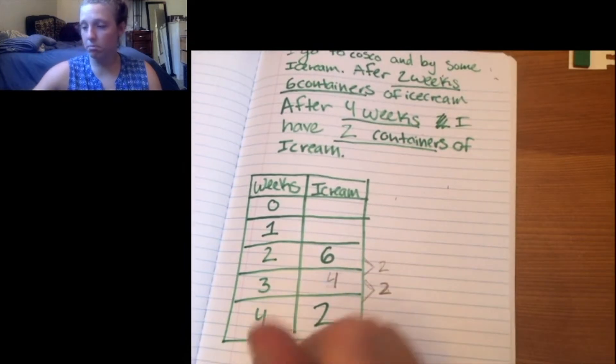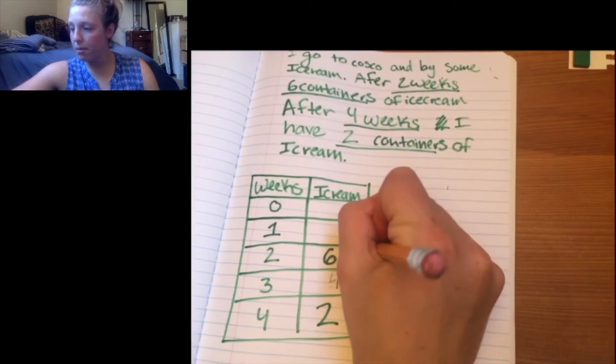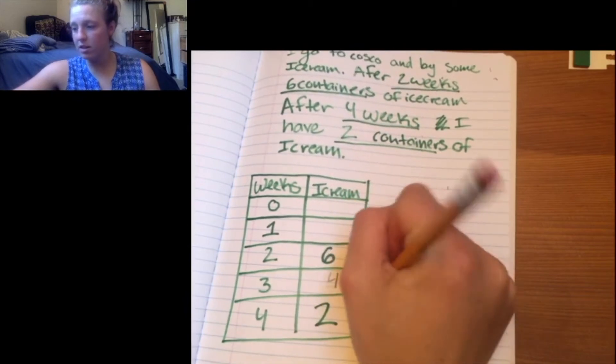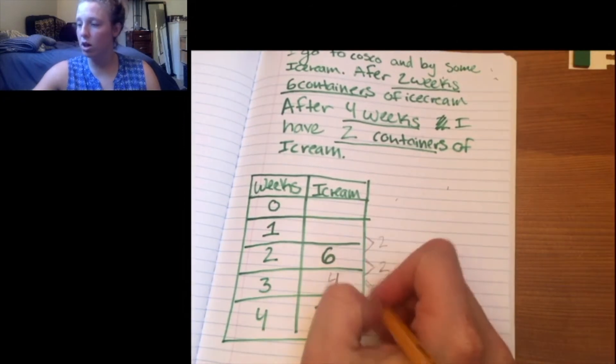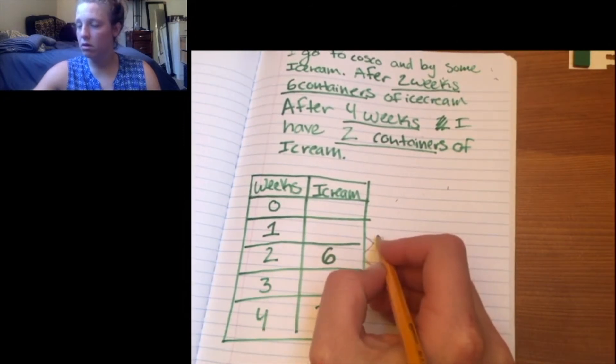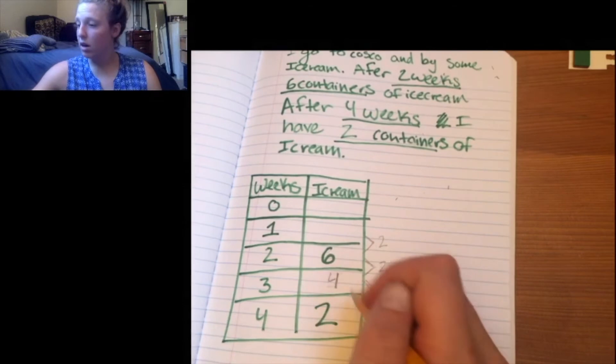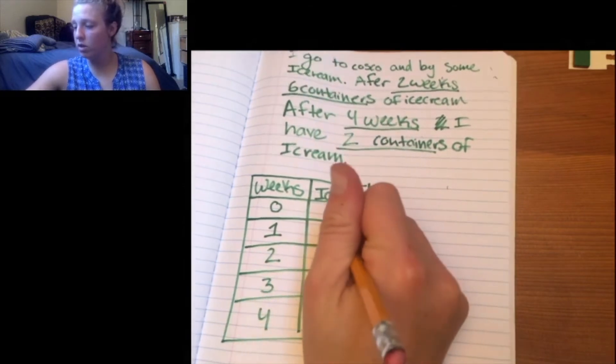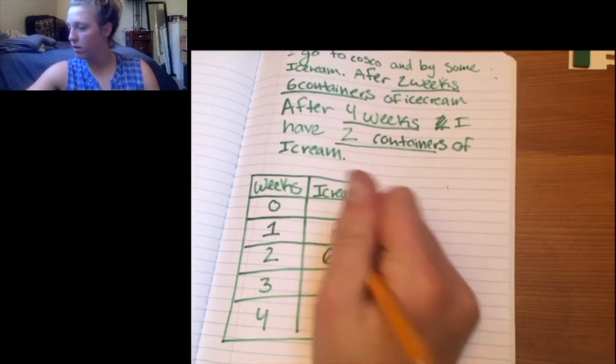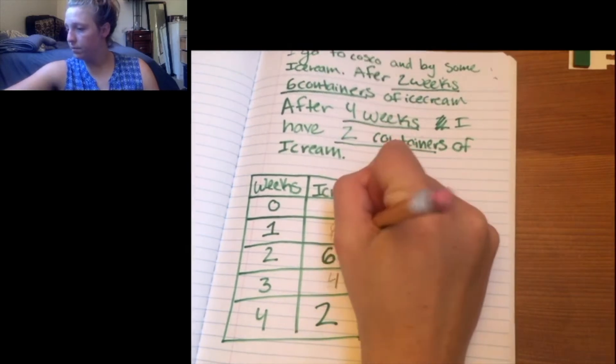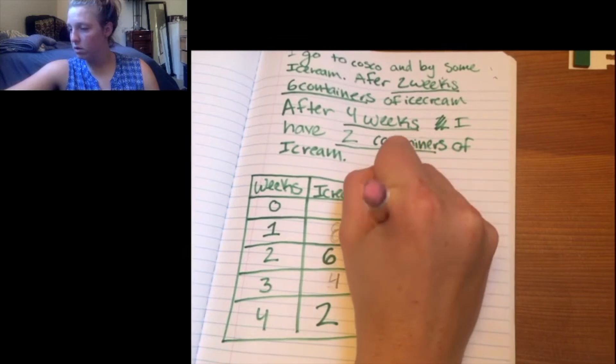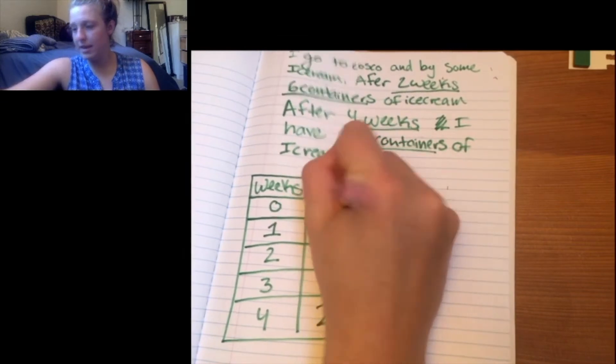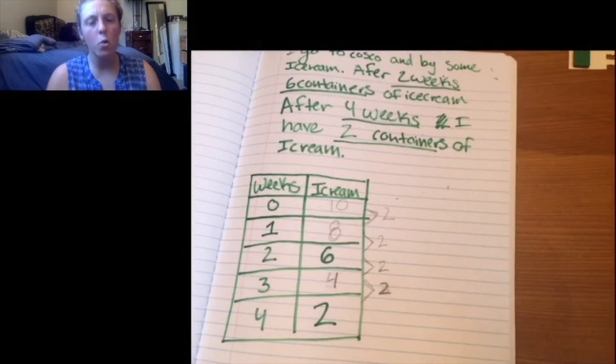So we have this information. And now we can work our way up. Because if this distance is two, we want something that has the distance of two each time. So this would be eight. And then again, two gives me 10. I guess I didn't really give you the purpose of what we're doing. We were trying to figure out how much ice cream I bought originally.